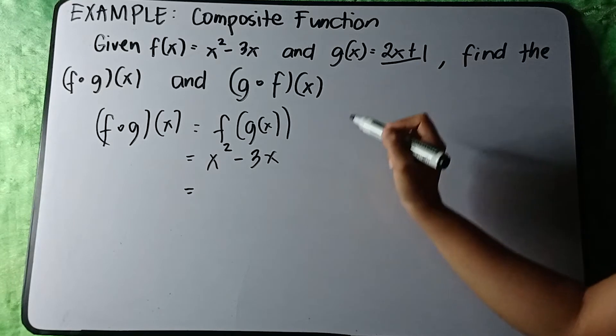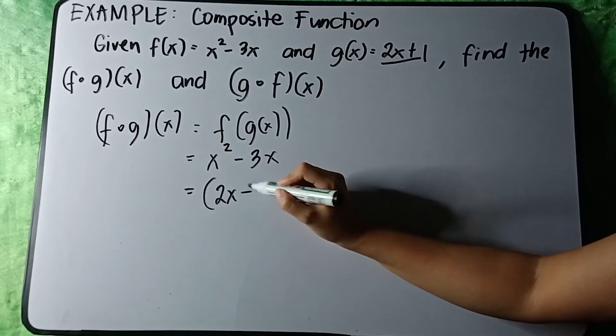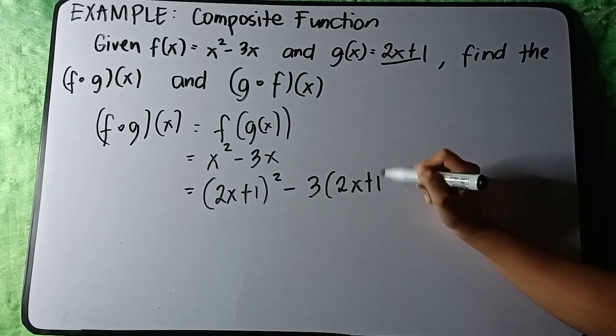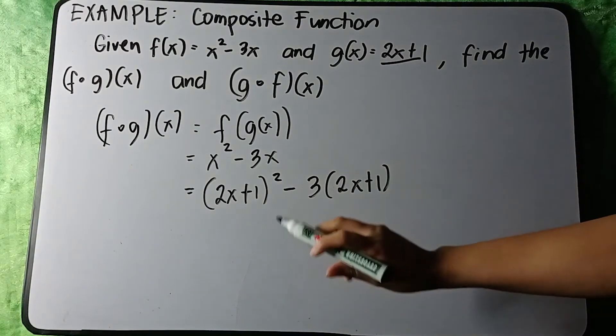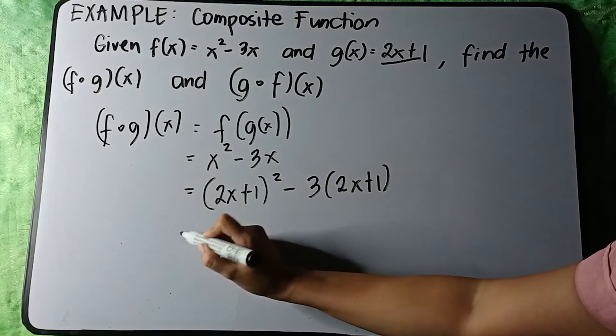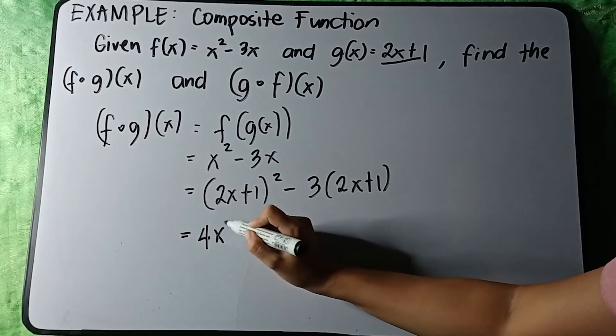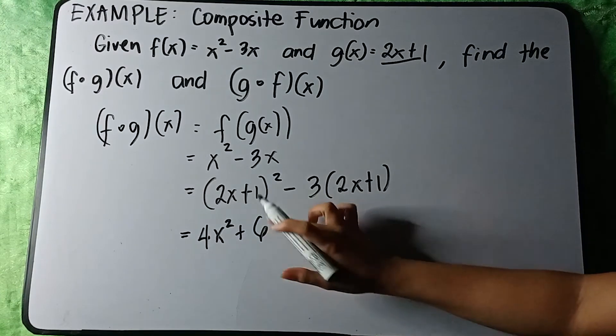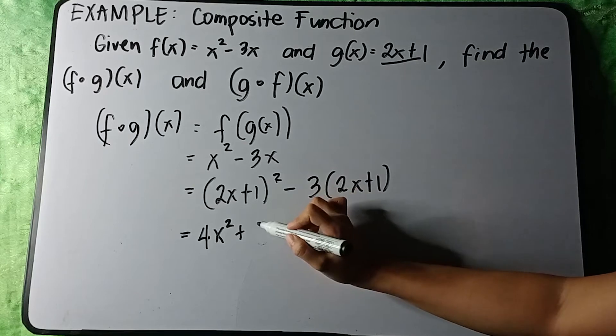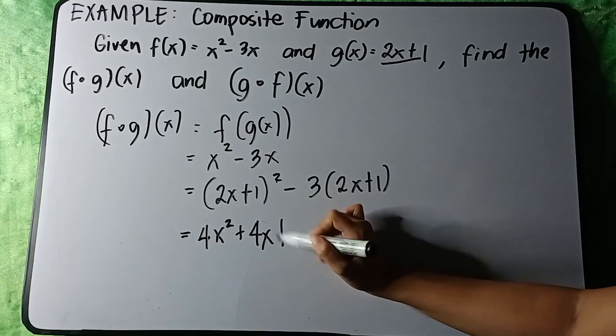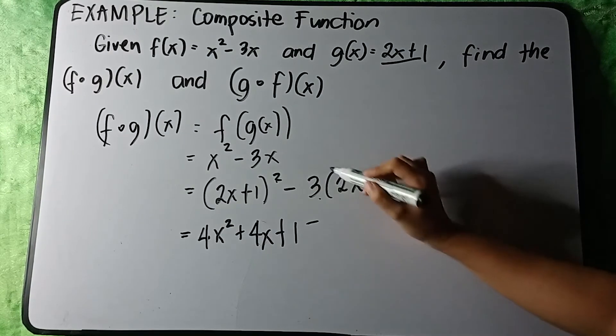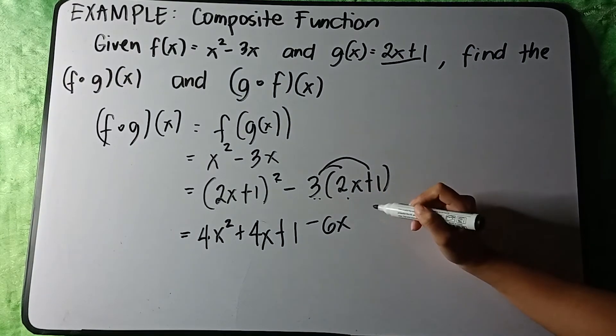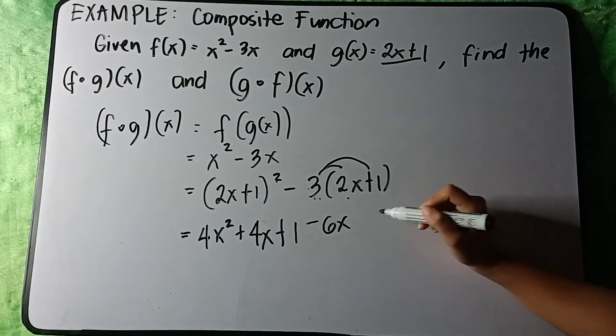So we have (2x + 1)² - 3(2x + 1). Getting the square of this binomial, we have (2x + 1)² = 4x² + 4x + 1. Then distributing, we have -3 times 2x is -6x, and -3 times 1 is -3.